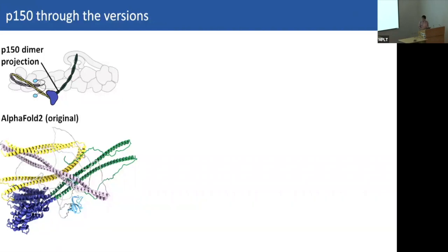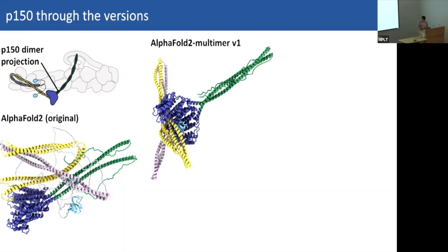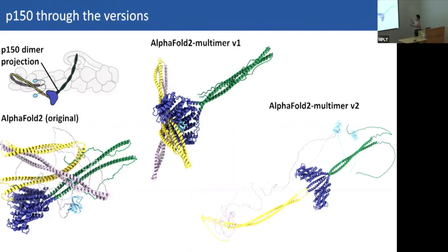Looking at how different AlphaFold versions handle the long P150: the original gave spaghetti. Multimer version 1 predicted individual structural fragments similarly to the manual fragment approach, with the coiled-coil foldback and individual domains predicted well, but all bundled together. Multimer version 2 stretched things out — one could imagine it fitting into the EM density with some coiled-coil warping — but for some reason the cyan coiled-coil has vanished. You'll need to combine predictions with prior knowledge of what your protein should look like.